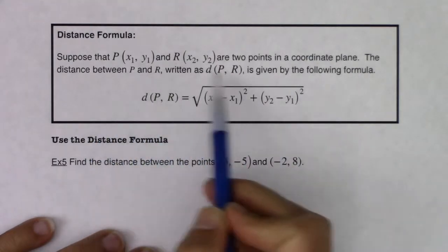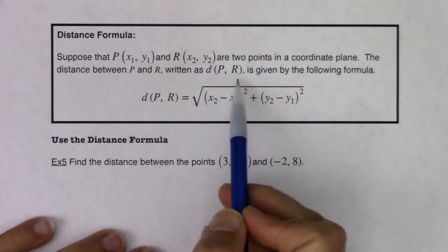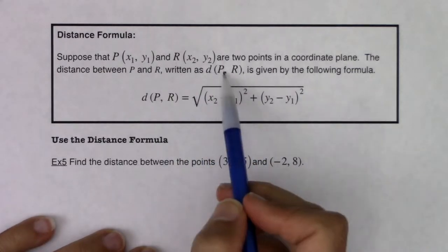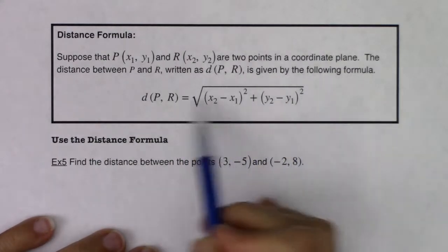The distance between P and R, which your book likes to write as D and then in parentheses P to R, I usually just write it as the letter D for distance. I'm good with your book's notation, but if I want to get the distance between these two points, here's the formula for it.